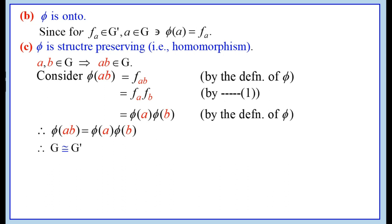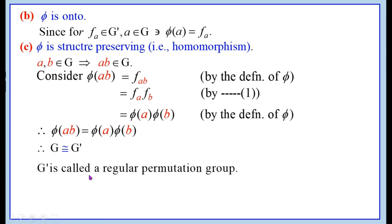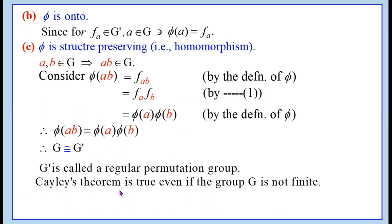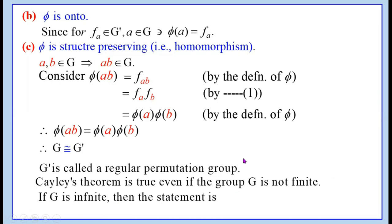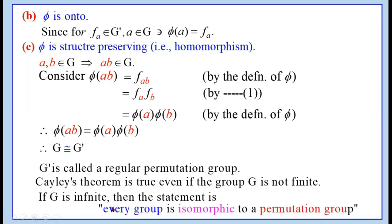Thus phi is one-to-one, onto, and a homomorphism. Therefore phi is an isomorphism from G to G', and G is isomorphic to G', where G' is called a regular permutation group. Thus, every finite group is isomorphic to a permutation group. This completes the theorem. Cayley's theorem is true even if the group G is not finite; if G is infinite, the statement becomes: every group is isomorphic to a permutation group.